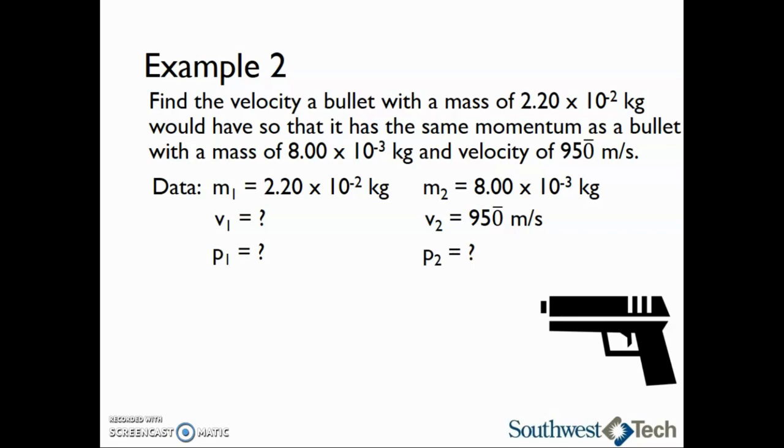We could solve for the momentum of the second bullet and then substitute that back into the equation for the first bullet using the basic equations, p sub 1 equals m sub 1 times v sub 1 and p sub 2 equals m sub 2 times v sub 2. However, since we want the momentum of both bullets to be the same, we can say that p sub 1 equals p sub 2. And then we can also say that m sub 1, v sub 1 equals m sub 2, v sub 2. This is what we will use as our main equation.